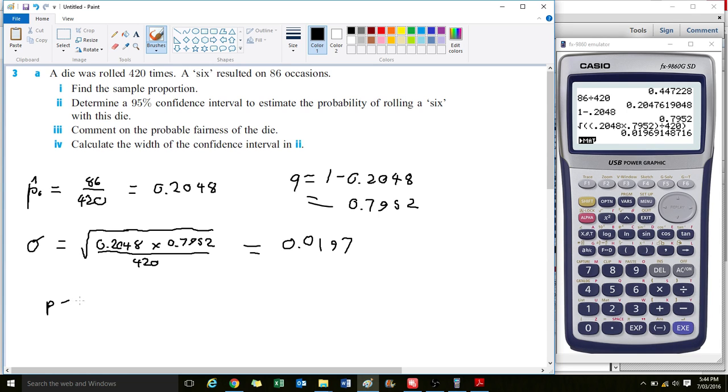P minus 1.96 times sigma is less than or equal to the population proportion, which is less than or equal to P plus 1.96 times sigma. We've got our P of 0.2048 and our sigma of 0.0197.